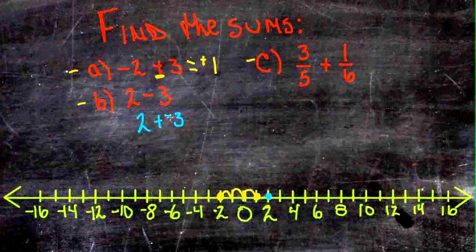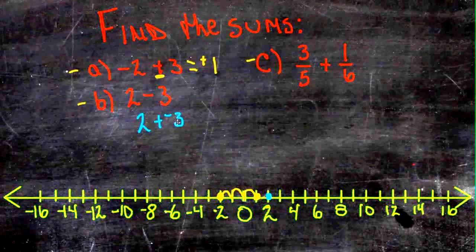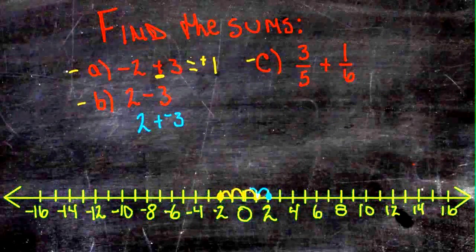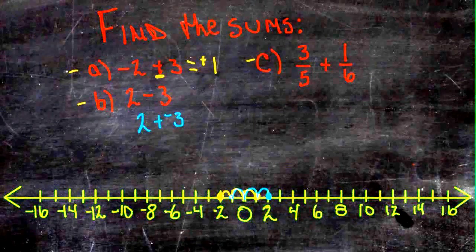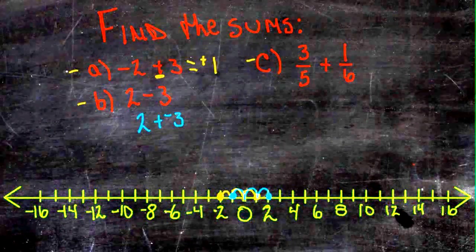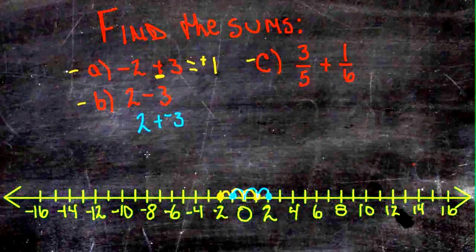Now, when we're adding a negative, if we added a positive by moving to the right, we must move to the left to add a negative. So we're going to go back 3 spaces: 1, 2, 3. Positive 2 minus 3, or positive 2 plus negative 3, is negative 1.